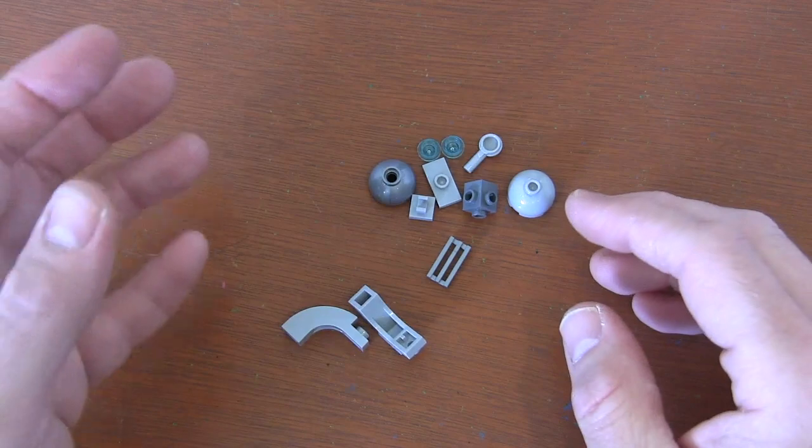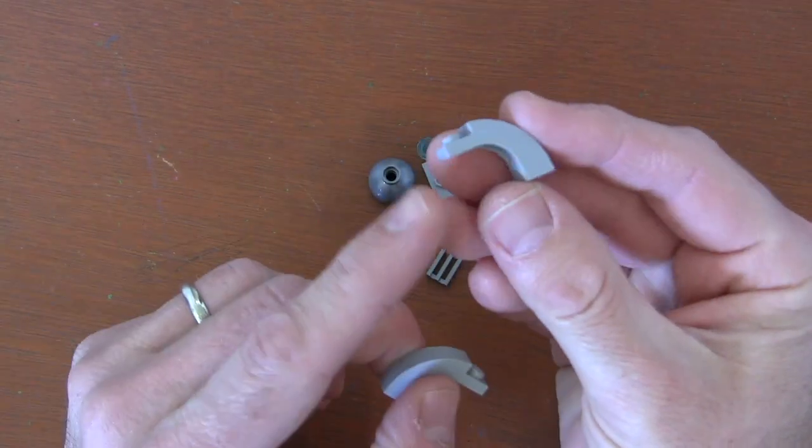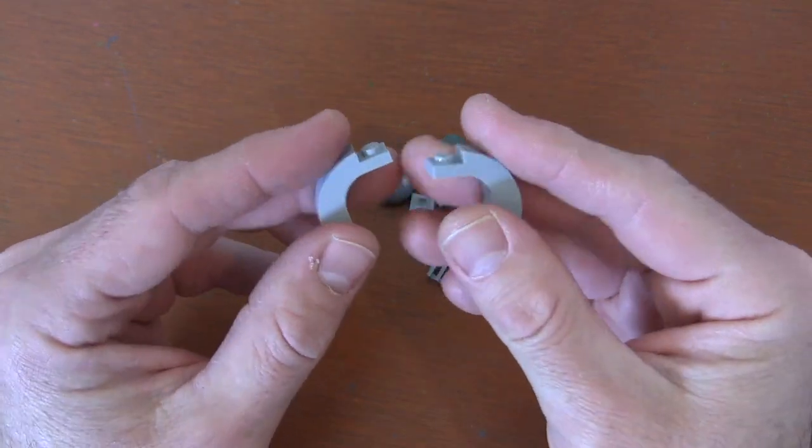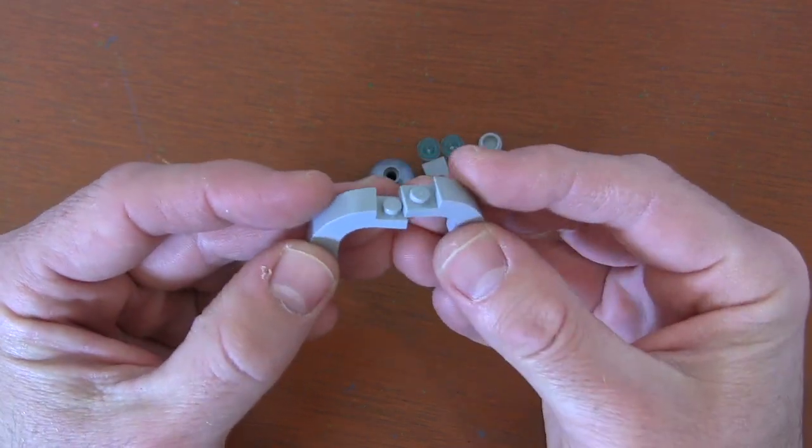To build the side of our droid control ship, we're going to get two of these slope pieces. They're pretty big ones, like three by two by one. I'll put the actual name in the description. We're going to take these two slope pieces and put them together so that those studs in the center are connected.